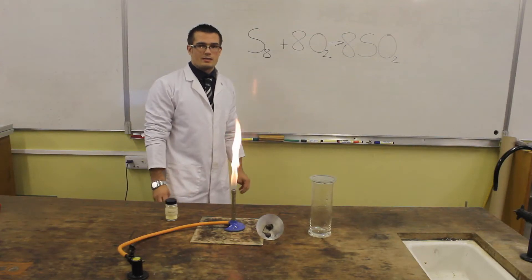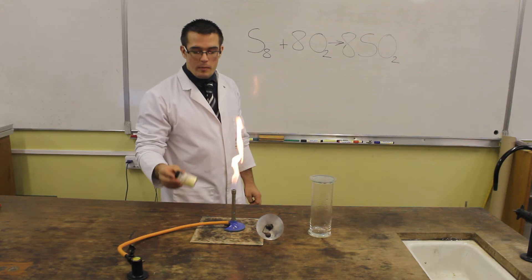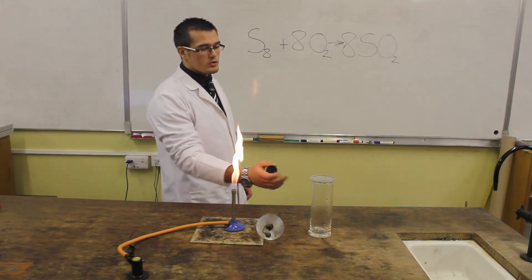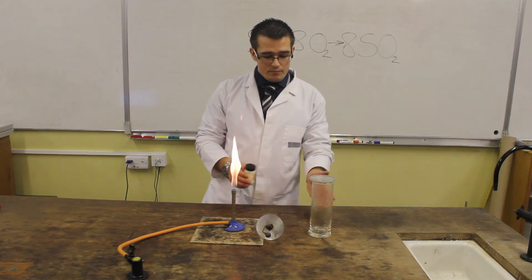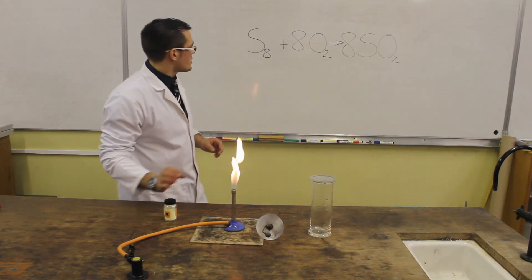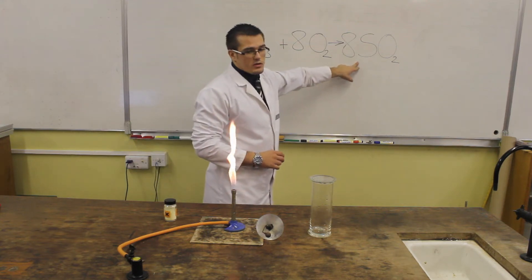We're going to make one of the pollutant gases we've just talked about. We're going to make sulfur dioxide and we're going to do that by reacting sulfur with pure oxygen. Sulfur normally is a yellow powder. We've got pure oxygen in the glass jar and we're going to react sulfur with oxygen to form sulfur dioxide.